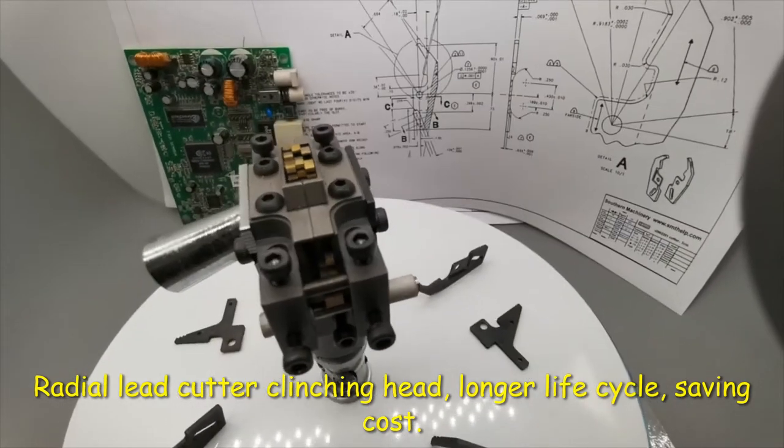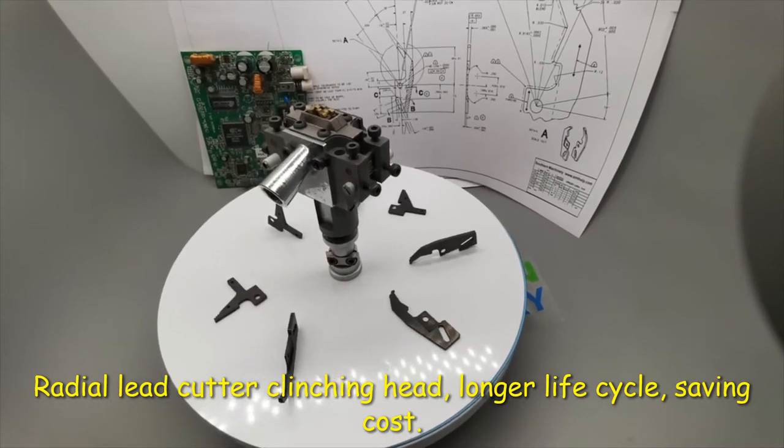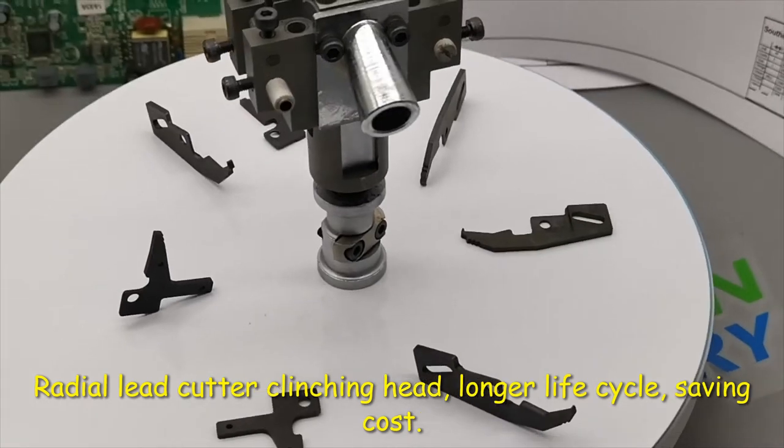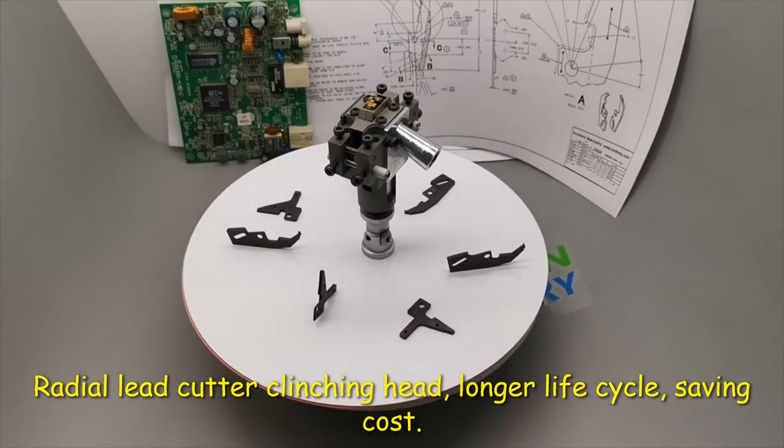One is the through-hole construction in which the component leads are inserted within, and the other is the surface mount construction wherein the components are situated on pads positioned on the external surfaces of the PCB. These types of construction have element leads that are fixed mechanically.